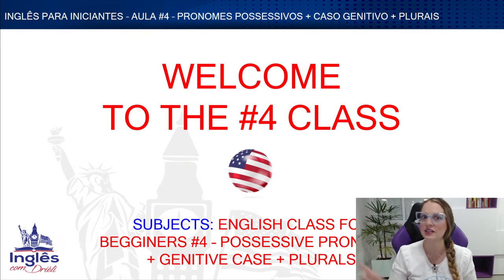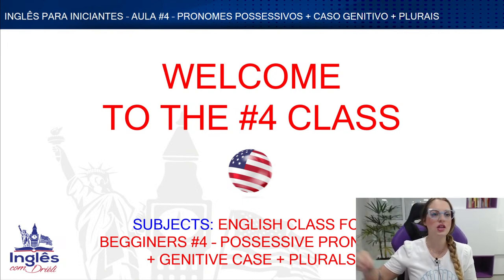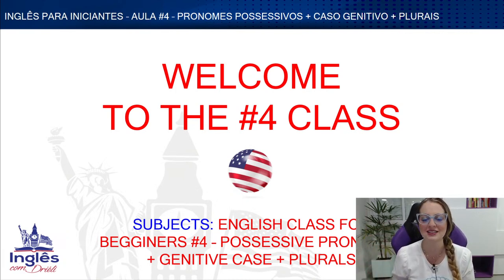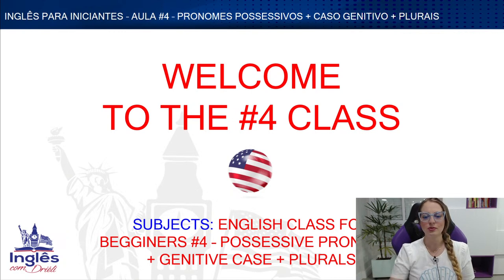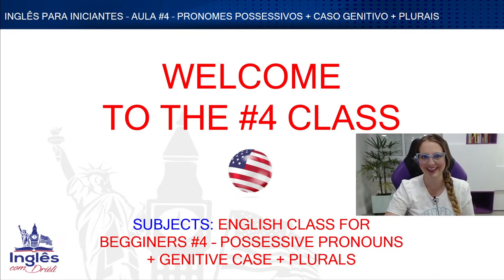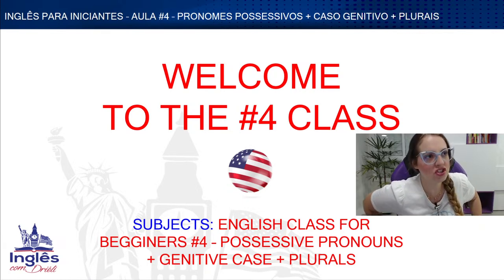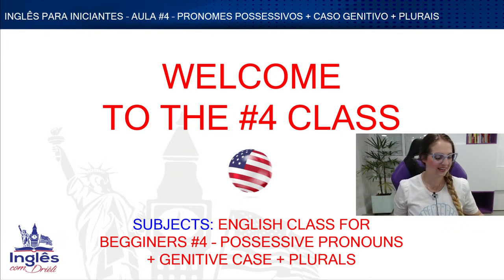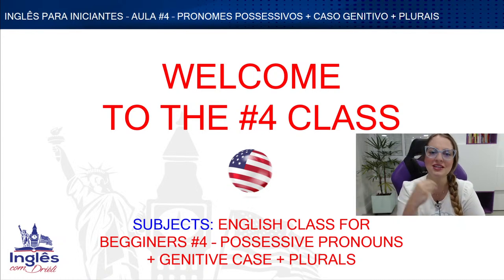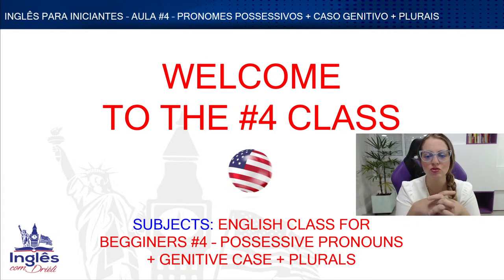Now we're going to see the possessive pronouns, which don't come before a noun — they stand alone, substituting the noun. For example, instead of 'my house,' I say just 'mine' if the person already knows I'm referring to the house. We're also going to see the genitive case — you may have heard of it in English — for example, instead of saying 'the house of Mary,' we say 'Mary's house.' That's the genitive case, and we'll see the rules.